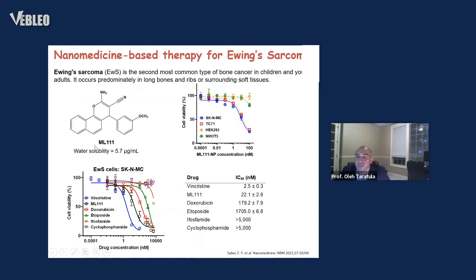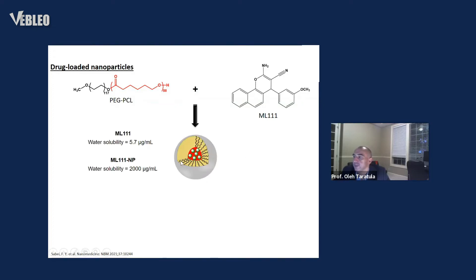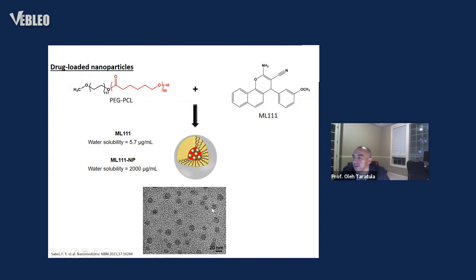One of the issues is that this molecule has limited water solubility — around six micrograms per mL. In order to improve the water solubility and develop a formulation for systemic administration, we used a nanoparticle-based approach. Specifically, we used an amphiphilic polymer called SPAC-PCL, which has hydrophobic and hydrophilic parts. We were able to encapsulate our molecule inside those polymeric nanoparticles, ending up with nanoparticles around 40 nanometers in size. We were able to increase the water solubility of that molecule by encapsulation into nanoparticles by more than 300 times — from six micrograms per mL up to 2,000 micrograms per mL.